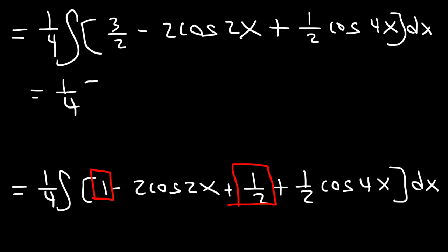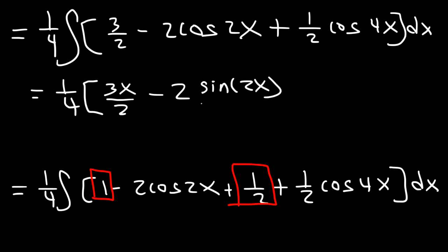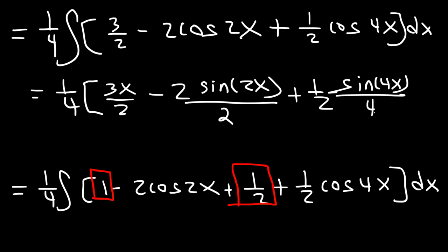The integral of 3 over 2 is a constant, so it becomes 3x over 2. The integral of cosine 2x is sine 2x divided by the derivative of 2x, which is 2. The integral of cosine 4x is sine 4x divided by the derivative of 4x, which is 4. That technique only works if the number you're dividing by is a constant — it must be a linear factor, not quadratic or cubic. And finally, plus C.